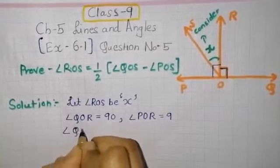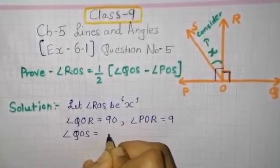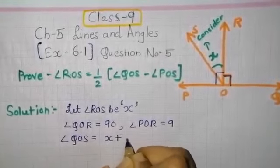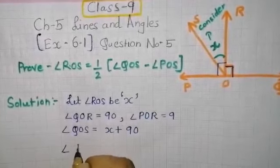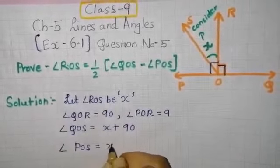We know that ∠ROQ plus ∠ROS will give you ∠QOS, so that's x + 90. Next, you have to find ∠POS, which equals 90 - x.